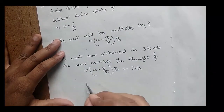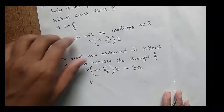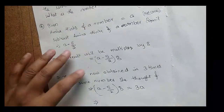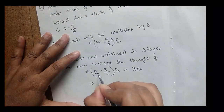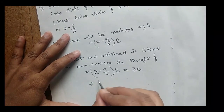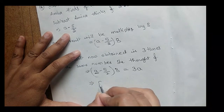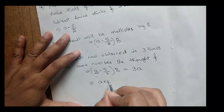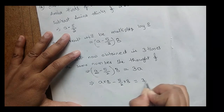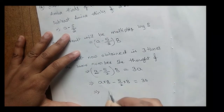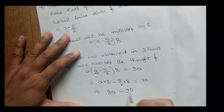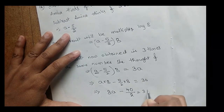We need to find the value of 'a'. Let's move into the simplification. Multiplying out: 8 × (a - 5/2) = 3a. Expanding gives 8a - 40/2 = 3a.